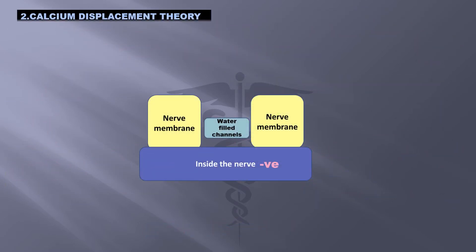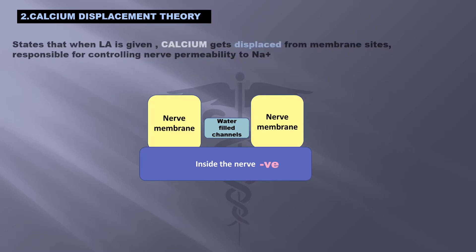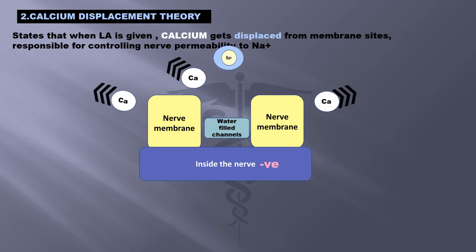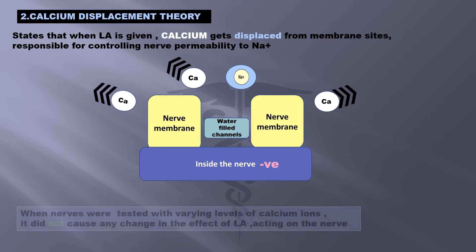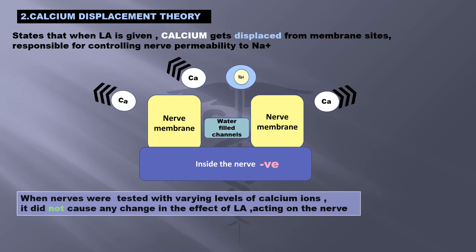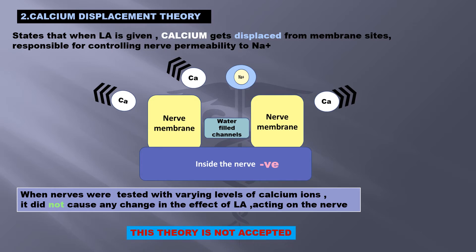Next is the calcium displacement theory. It states that when local anesthetic is given, calcium gets displaced from membrane sites responsible for controlling nerve permeability to sodium ions. When nerves were tested with varying levels of calcium ions, it did not cause any change in the effect of local anesthetic acting on the nerve. So, this theory is also not accepted.